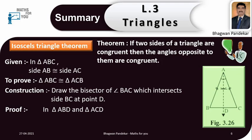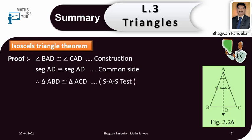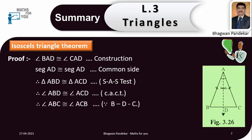Proof. In triangle ABD and triangle ACD: segment AB congruent segment AC — this is given information. Angle BAD congruent angle CAD — reason is construction. Segment AD congruent segment AD — reason is common side. Therefore, triangle ABD congruent triangle ACD. Therefore, angle ABC congruent angle ACB.